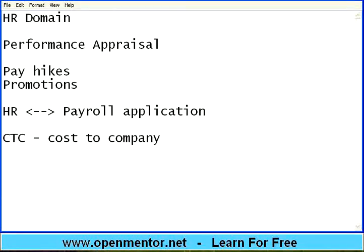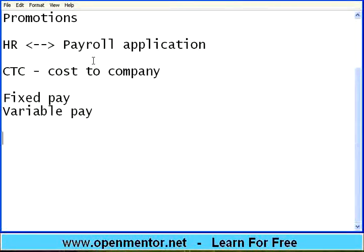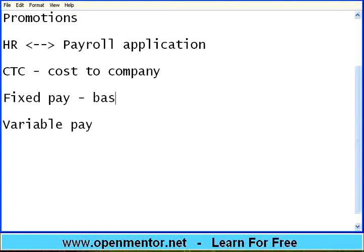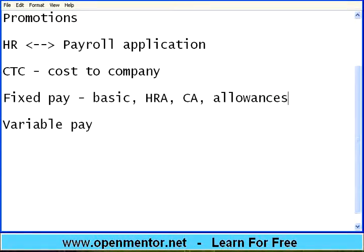Cost to company is anything that the company spends on you. The split-up of this cost to company will be like fixed pay and variable pay. If you take the fixed pay, you may see something like basic pay, house rent allowance, city allowance, and there will be any number of allowances — it may be conveyance allowance, food allowance, entertainment allowance.